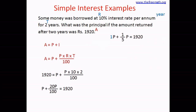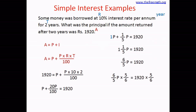Adding both the P terms gives us 1 and one-fifth P equals 1,920. Converting this mixed number to an improper fraction: 5 times 1 plus 1 equals 6, so we get 6 over 5 times P equals 1,920. To isolate P, multiply both sides by 5 over 6. When you multiply 6 over 5 by 5 over 6, the 6s and 5s cancel out.